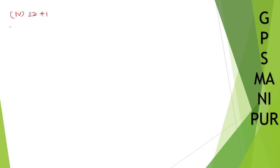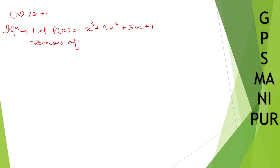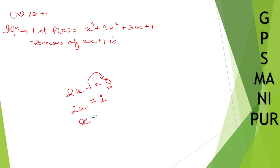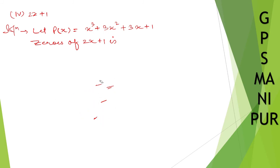Now Roman number 4: the divisor is (2x + 1). Let p(x) = x³ + 3x² + 3x + 1. To find the zero of (2x + 1): set 2x + 1 = 0, so x = -1/2. The zero of (2x + 1) is -1/2.